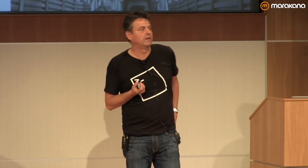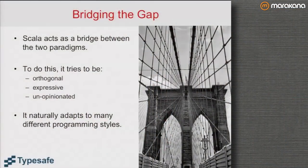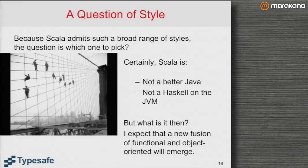Scala then is a bridge between those two paradigms. To do this, it tries to be very orthogonal — to bridge this span with as few concepts as possible while still keeping the whole span. It tries to be expressive and unopinionated, not caring whether you're on the imperative or functional side, so it naturally adapts to many different programming styles. When I started with Scala as an academic I thought this was the best of all worlds. Afterwards I had to learn that, well, because you have a choice of such a broad range of styles, which one do you pick? That's a hard problem for many people.